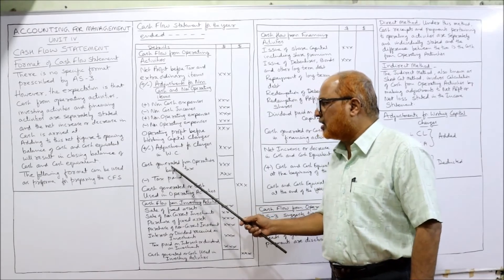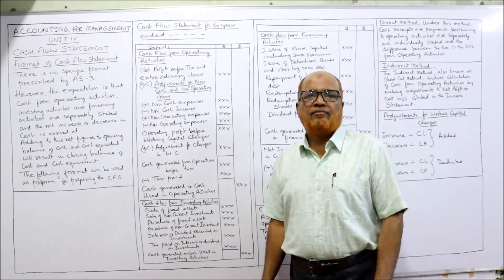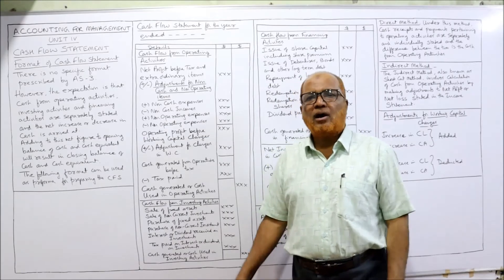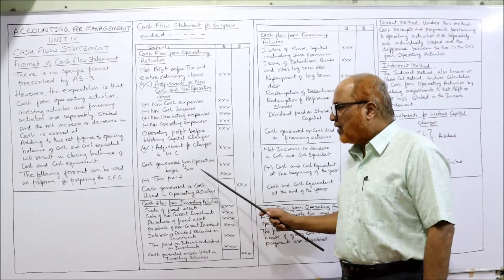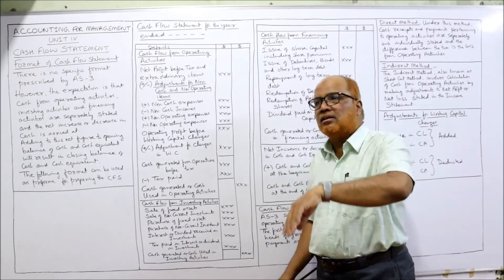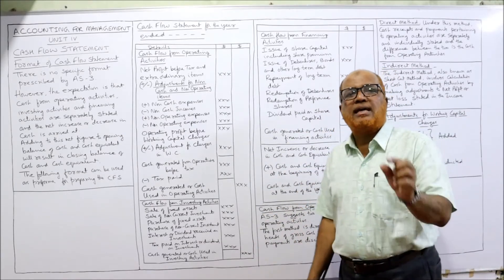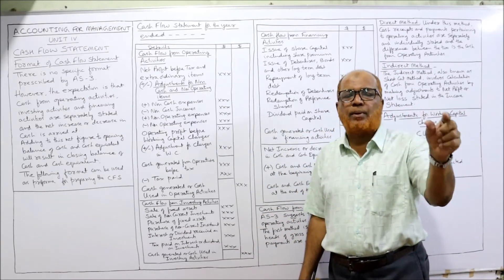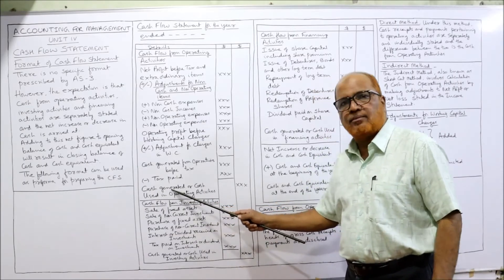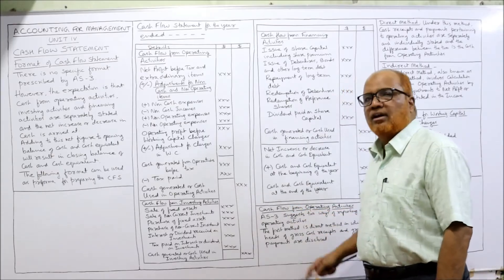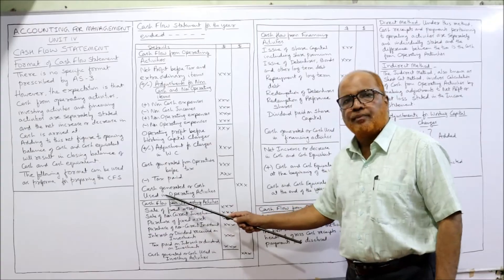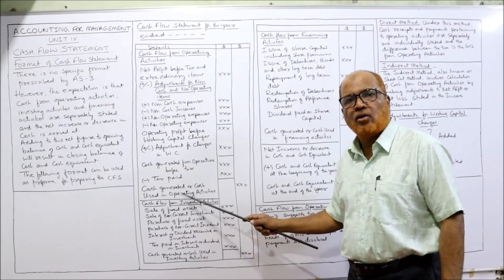After correspondingly adding and deducting items, we get cash generated from operations before tax. We then deduct tax paid. The final amount is taken in the outer column — this is called cash generated from operating activities. If the figure is positive, it is cash generated from operating activity; if the figure is negative, it is cash used in operating activity.